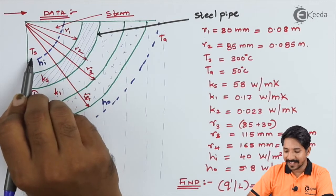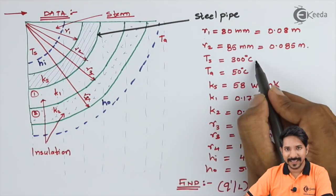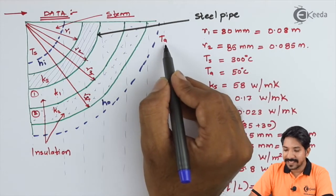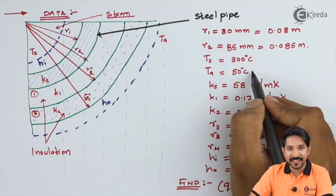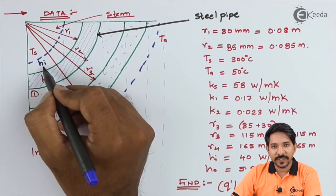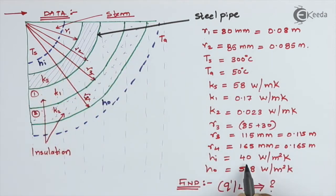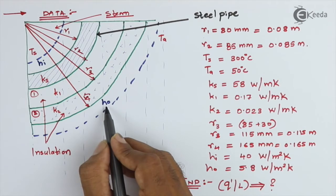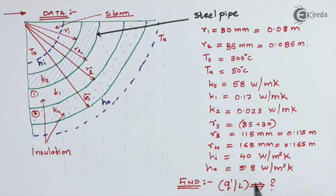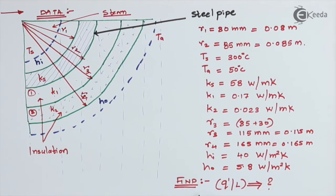The inside steam temperature is TS = 300°C and the ambient temperature TA = 50°C. The inside heat transfer coefficient HI = 40 W/m²·K and the outside heat transfer coefficient HO = 5.8 W/m²·K. We need to find q-dash, which is the heat transfer rate per unit length, written as q/L, assuming L = 1 meter.